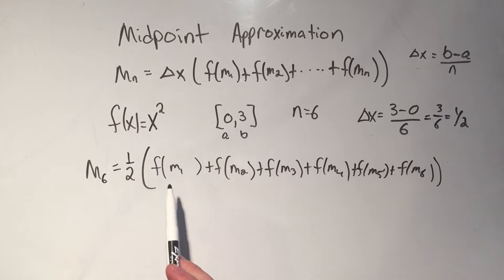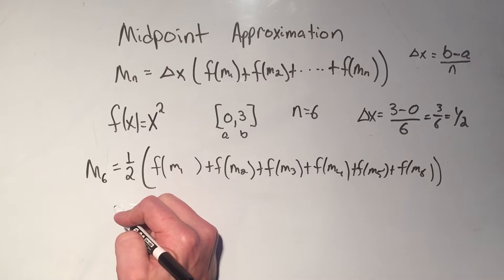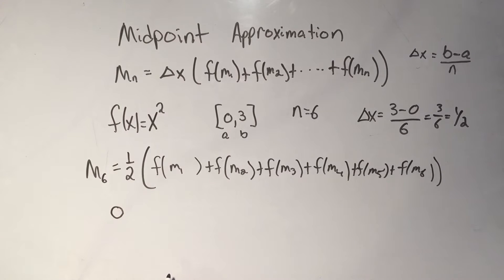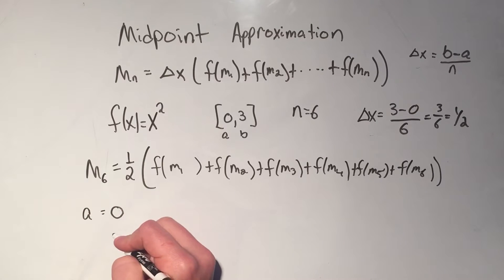So now I need to find all of these different midpoints. Well, my first point is 0. Correct? That was a.